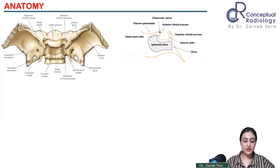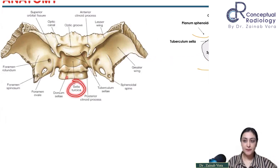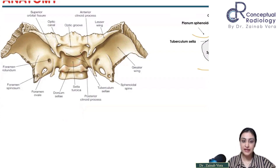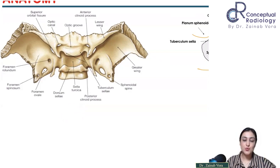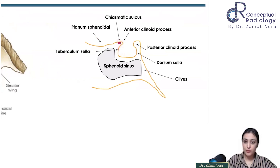Let's begin with some anatomy. The sella is housed in the middle cranial fossa — it's a small fossa called sella turcica, which literally means a Turkish saddle because of its shape resembling the saddle of a Turkish horse. The boundaries are: anteriorly, the tuberculum sellae, and posteriorly, the dorsum sellae. These are the two boundaries between which lies the depression that is sella turcica. Anteriorly we have the anterior clinoid processes and posteriorly the posterior clinoid processes.